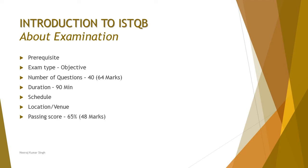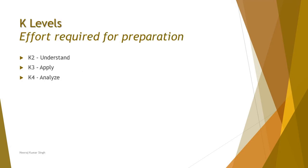Just like the Agile Tester Extension, this will be a small certification program with a limited number of chapters covering the syllabus. Regarding K levels — the knowledge levels — as this is an advanced level Agile certification, there are no K1 questions in the syllabus. The remaining three levels — K2, K3, and K4 — will be marked for each topic in the certification syllabus.